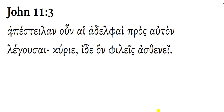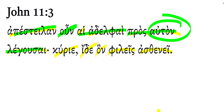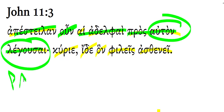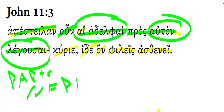John 11:3. Here we read: So the sisters — that is, Mary and Martha, the sisters of Lazarus — sent to him, that is, sent to Jesus. Notice how this present active participle nominative feminine plural is describing what these nominative feminine plural people, the sisters, are saying. It introduces the content of what they're saying here.